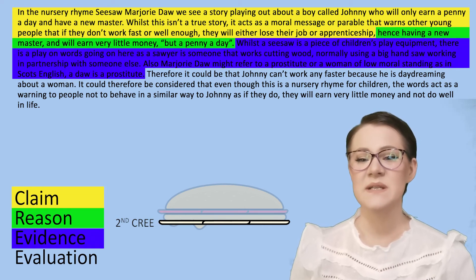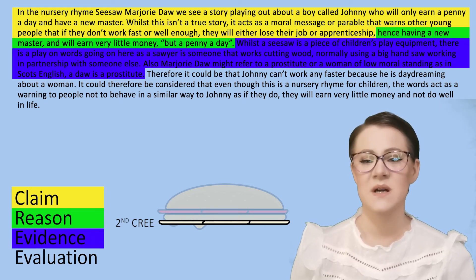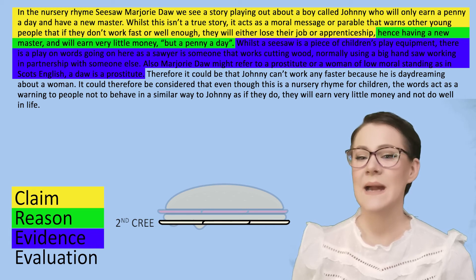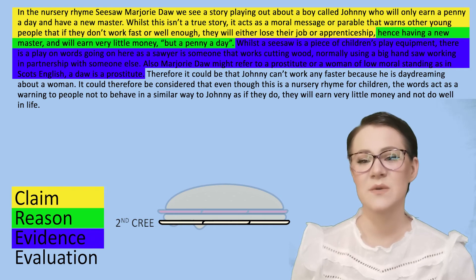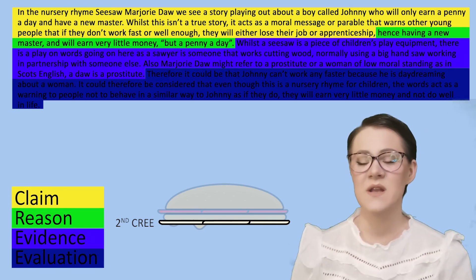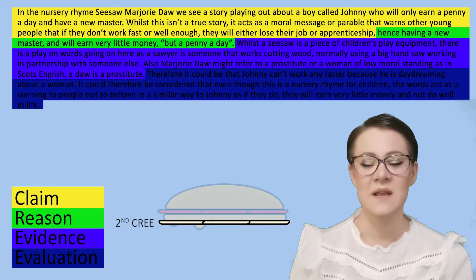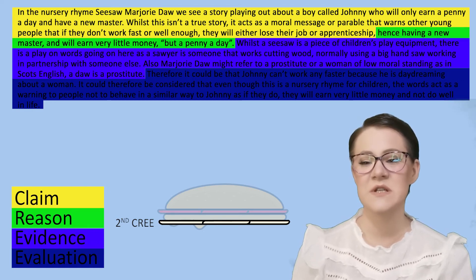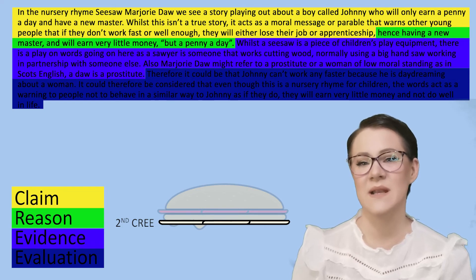Whilst a seesaw is a piece of children's play equipment, there is a play on words going on here, as a sawyer is someone that works cutting wood, normally using a big handsaw working in partnership with someone else. Also, Margery Dore might refer to a prostitute or a woman of low moral standing, as in Scots English a 'dore' is a prostitute. Therefore, it could be that Johnny can't work any faster because he is daydreaming about a woman. It could therefore be considered that, even though this is a nursery rhyme for children, the words act as a warning to people not to behave in a similar way to Johnny, as if they do, they will earn very little money and not do well in life.